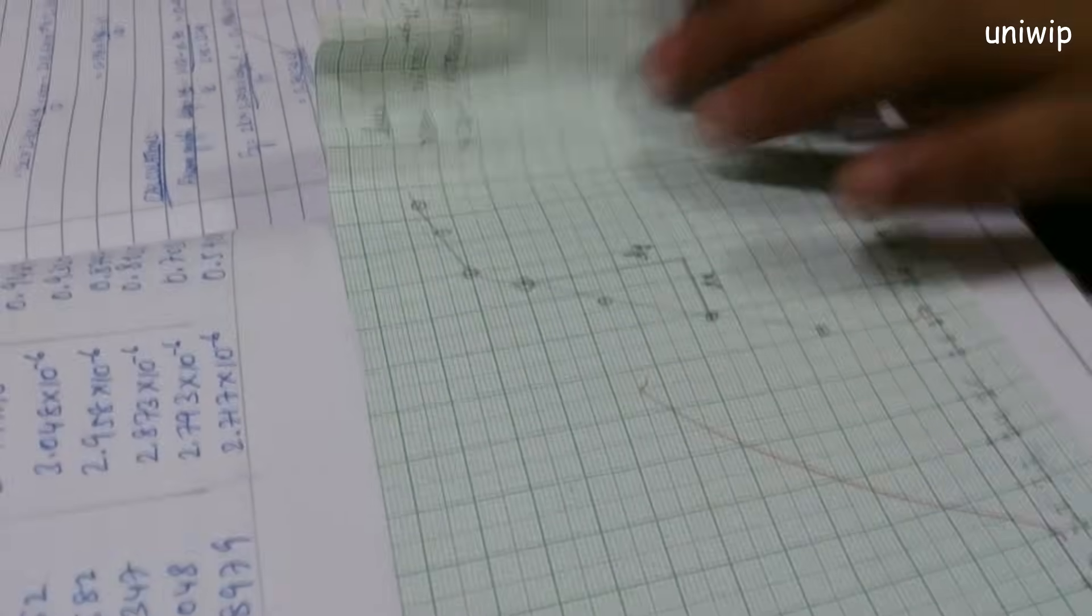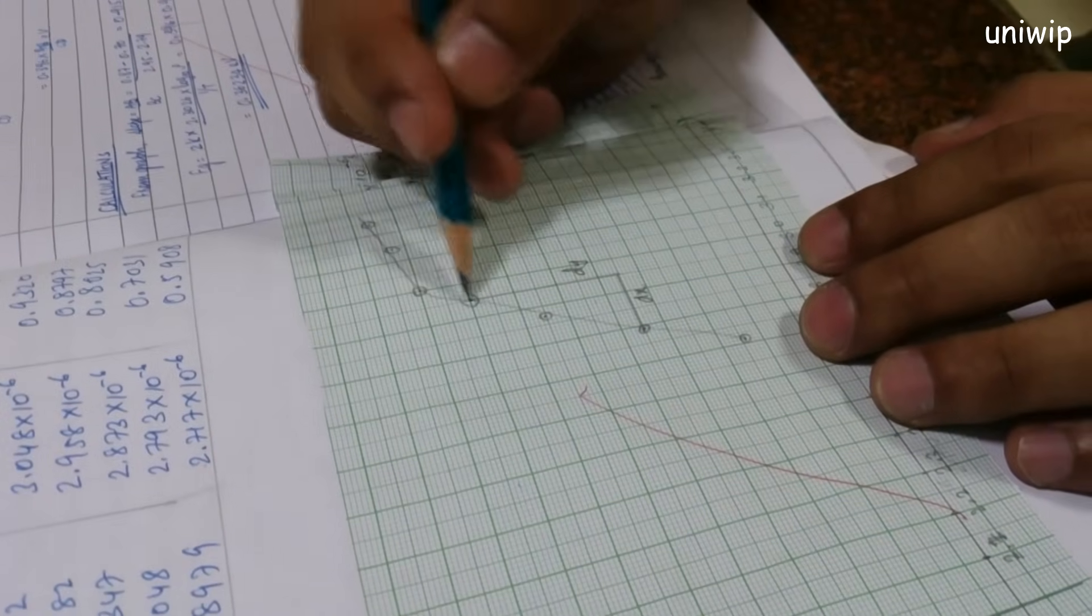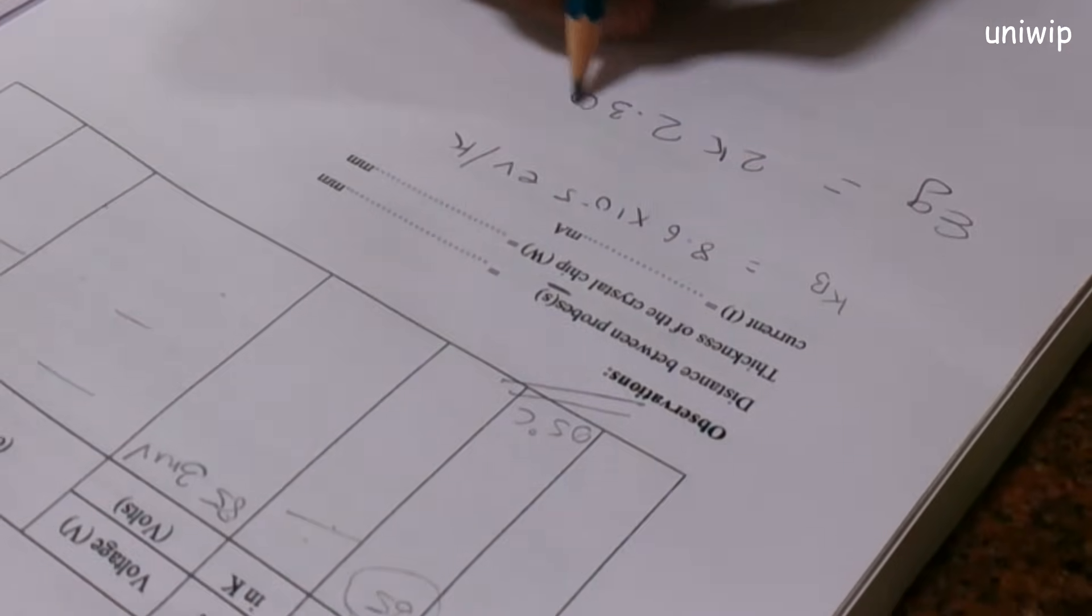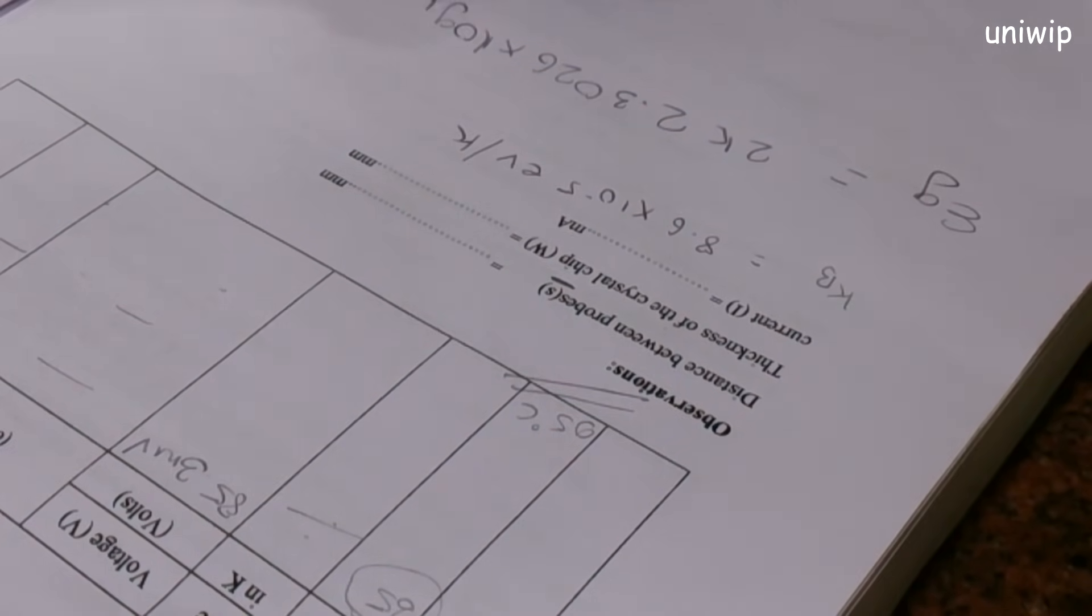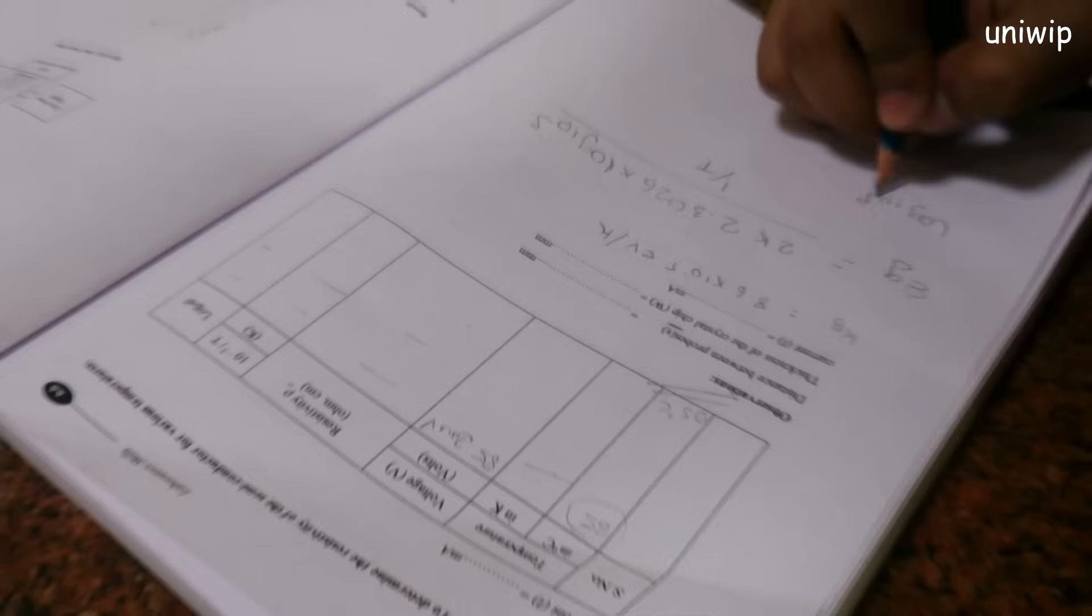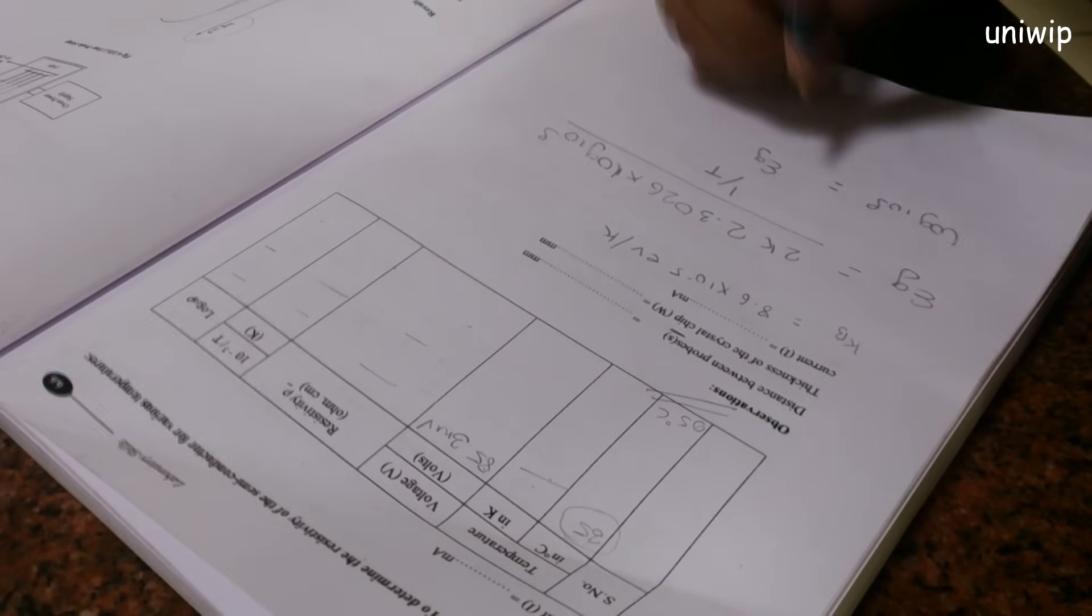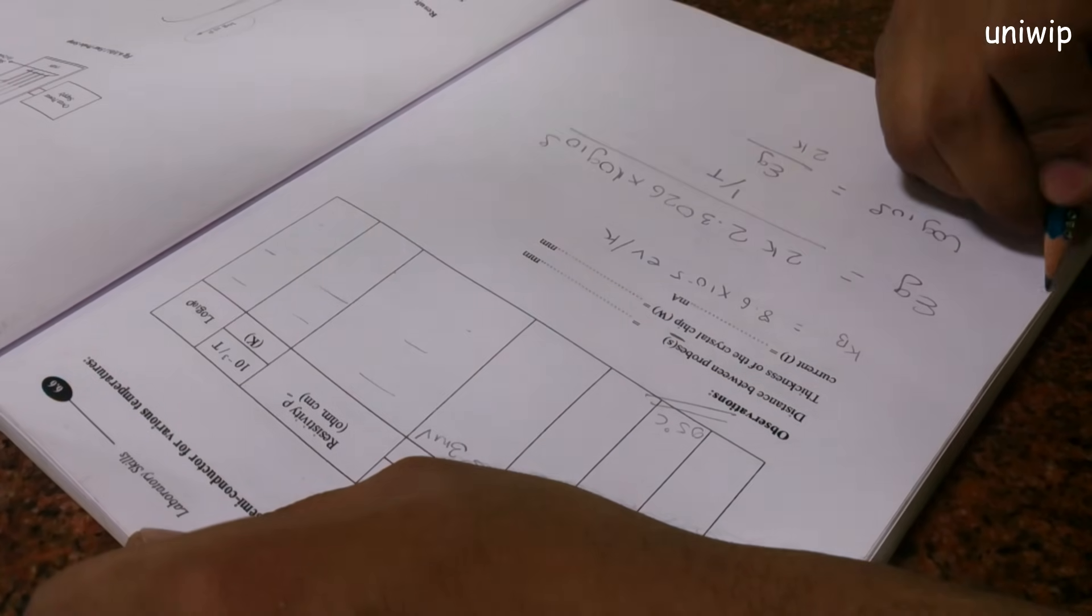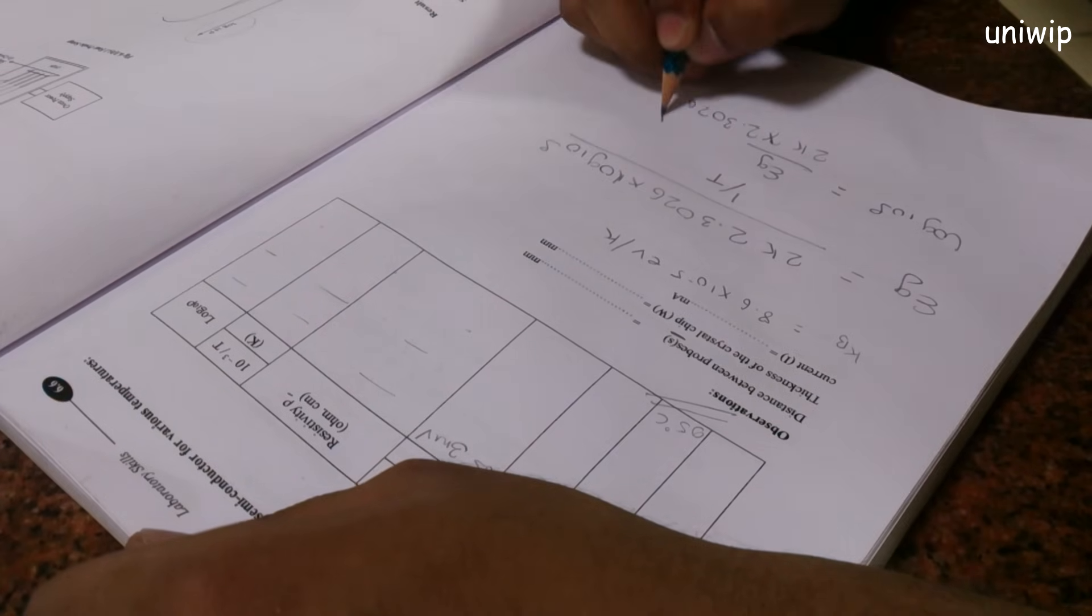From the graph and from the straight line point, calculate the gradient using two different points over here. The gradient we plotted, let's go back to the formula now. The formula of eg, the formula of eg is equal to 2k times 2.3026 into 10 log base 10 of s divided by 1 by t. So what I did, I plotted log base 10 rho in y-axis and 1 by t on x-axis. Log base 10 rho equals to eg times 2k times 2.3026 times 1 by t.